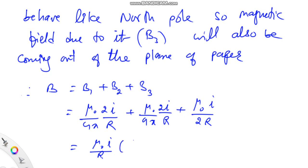Taking μ₀i/r as common, it will leave behind 1/2π plus 1/2π plus 1/2. So finally this magnetic field comes out to be μ₀i times (2 + π) divided by 2πr, which is the answer for this problem.